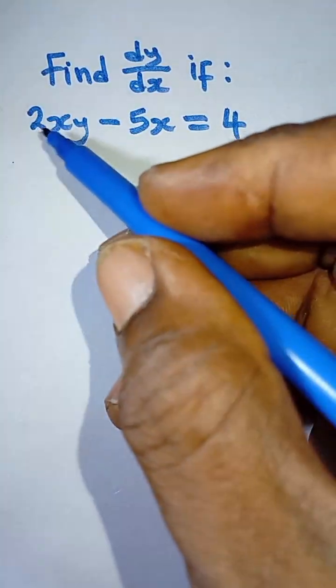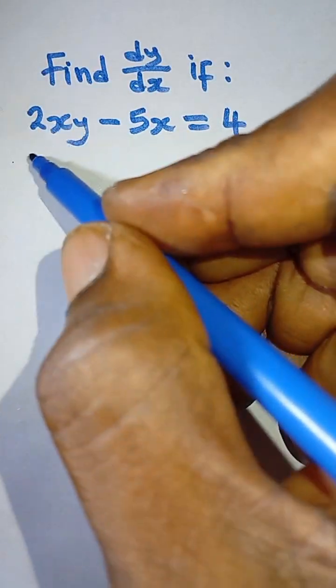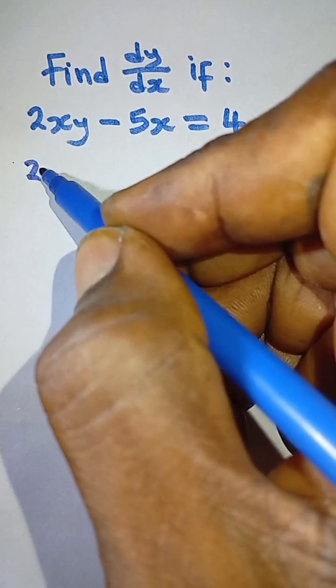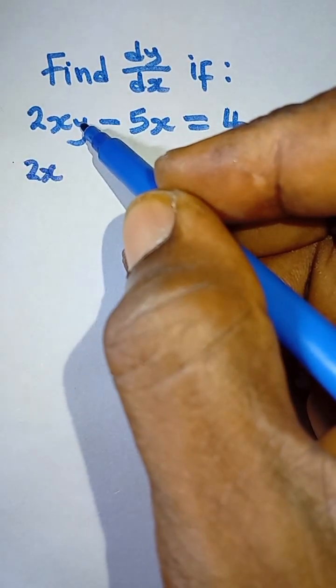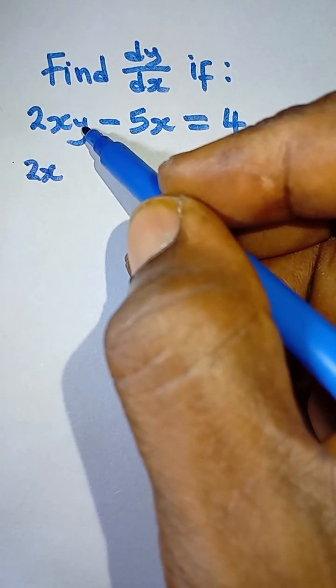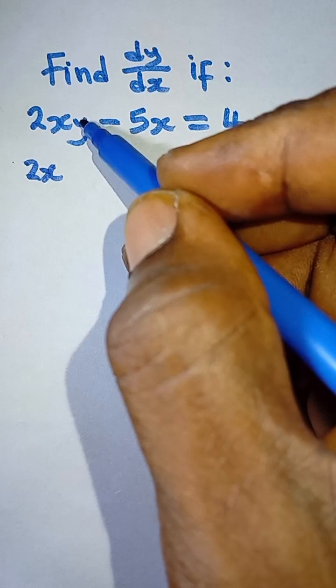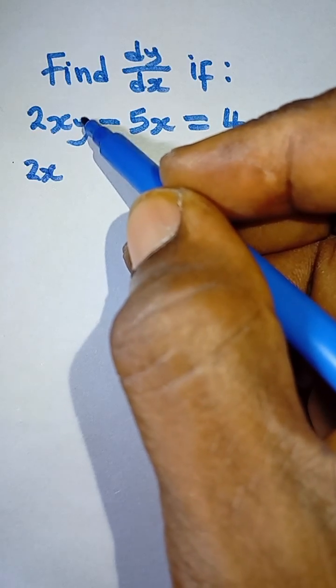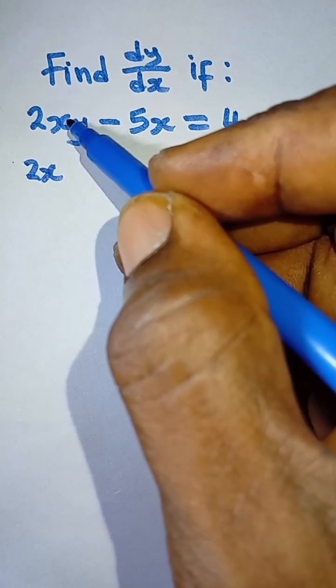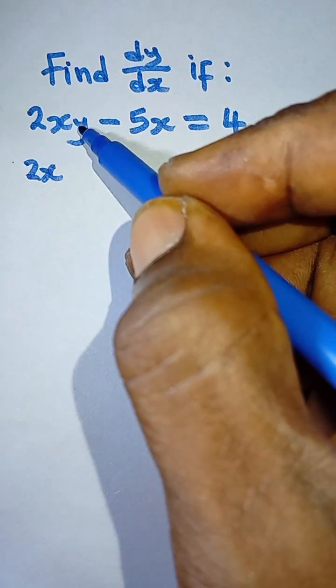This is implicit differentiation. To differentiate this, you say 2x multiplied by the derivative of y. The derivative of y is dy/dx, so it's 1.